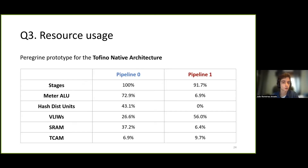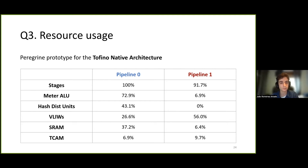In terms of resource usage, Peregrine's resource usage on the Tofino switch is shown on this table, with the processing split between two pipelines. The second pipeline is used only once per epoch whenever we perform recirculation and calculate 2D traffic statistics. As our implementation work and evaluation progresses, we hope to optimize these values and the resource usage of Peregrine's components on the switch as much as possible.